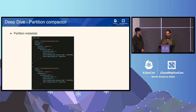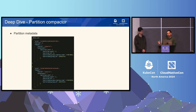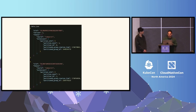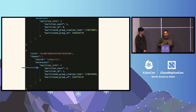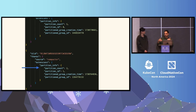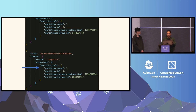In the metadata file of a block, we added a new section called partition information. It contains a partition group ID — a number generated from the min and max time of the blocks (essentially the time range of the partition group). We also have a partition count, which is the decided number of partitions for that partition group, and a partition ID, which identifies the exact partition for the block we're looking at.